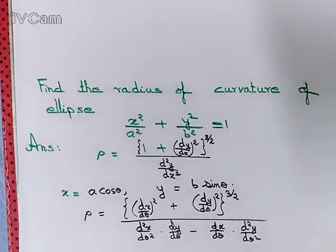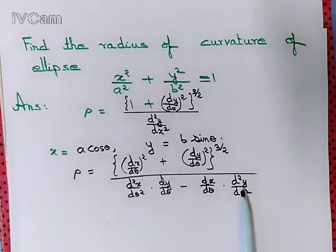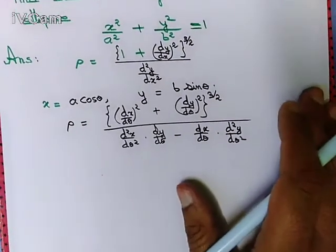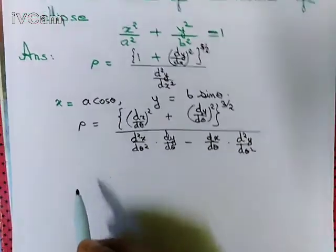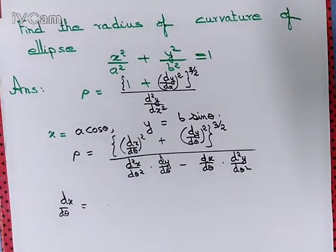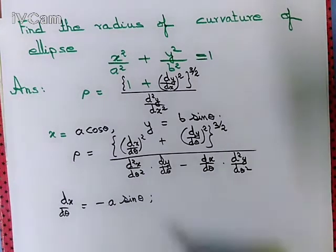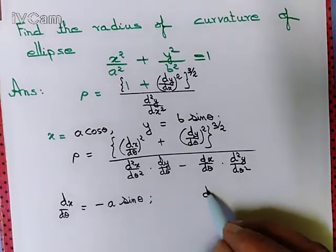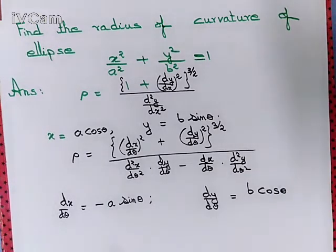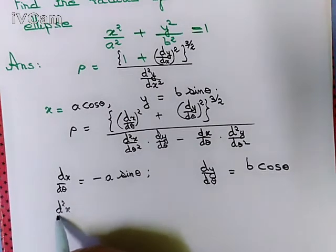Now we just need to compute dx/dθ, dy/dθ, d²x/dθ², and d²y/dθ². Differentiating x = a·cosθ gives dx/dθ = −a·sinθ. Differentiating y = b·sinθ gives dy/dθ = b·cosθ. We also need the second derivatives, so differentiating again gives d²x/dθ².